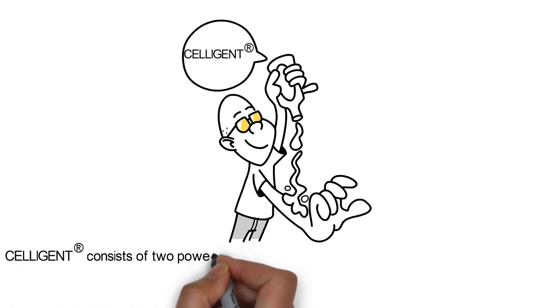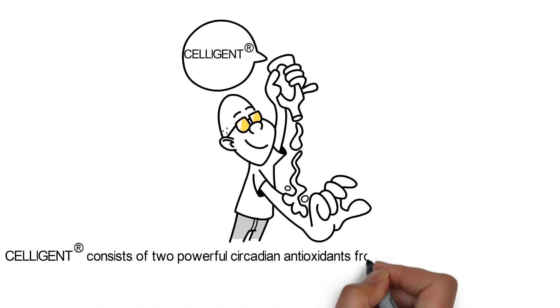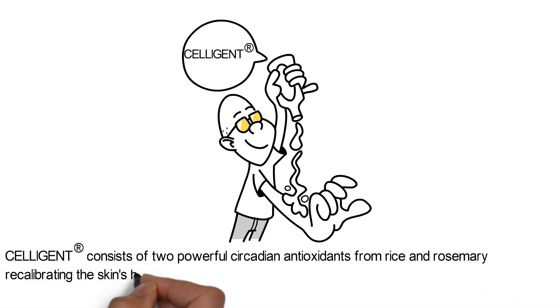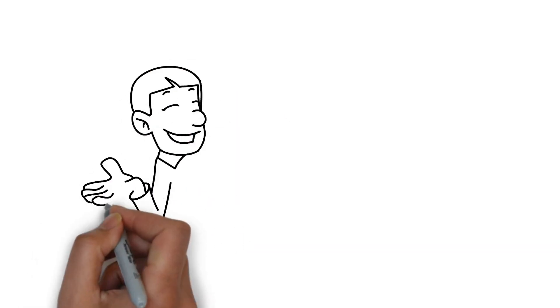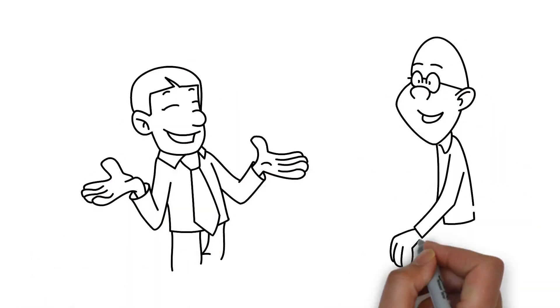Celigent consists of two powerful circadian antioxidants from rice and rosemary, recalibrating the skin's bio-rhythm. By resetting the epidermal clock, Celigent immediately strengthens the skin barrier, increases moisture and eliminates redness. Thanks to Celigent, Philippe looks fresh despite his slight timezone hangover.